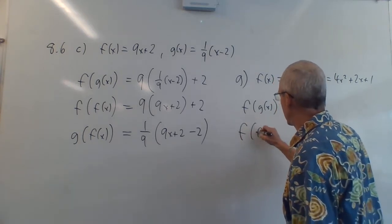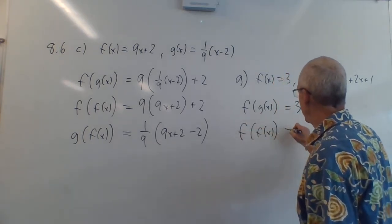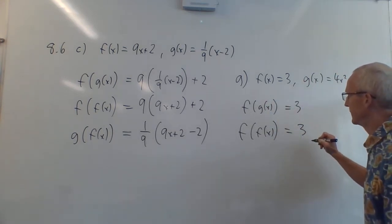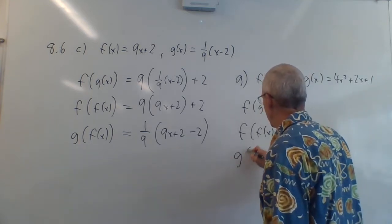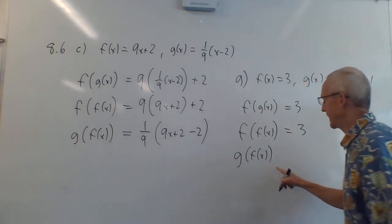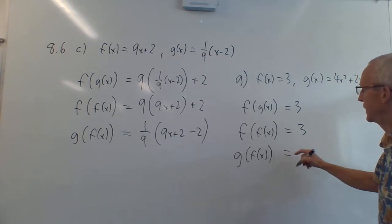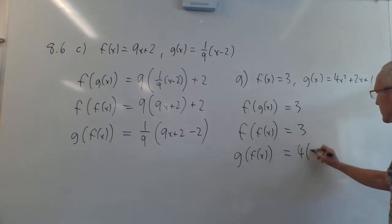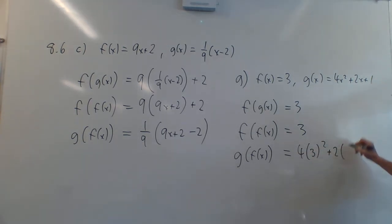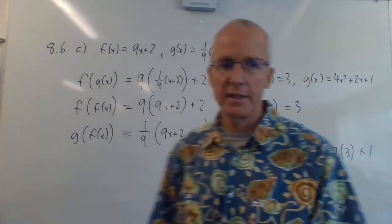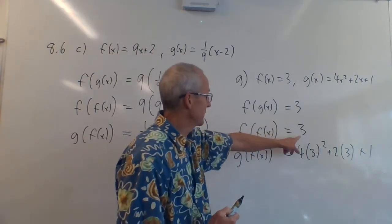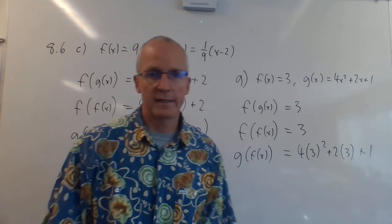Then we go f of f of x. You take f of x, and everywhere there's an x in f of x, you plug in 3. But there is no x, so it's also equal to 3. Now g of f of x means everywhere there's an x in g, you plug in 3. So you go 4 times 3 squared plus 2 times 3 plus 1. You can multiply that out, but the idea here is what counts. If there's a constant, it's super easy. Just everywhere there's an x, you plug in the function.